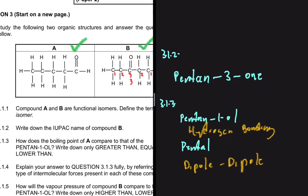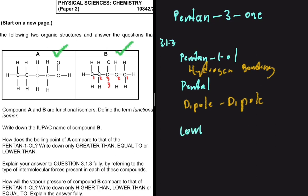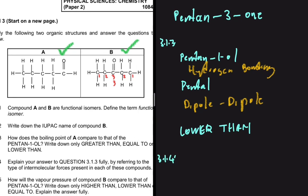Pentanal is an aldehyde, so its intermolecular forces are dipole-dipole. To answer this question you need to know which intermolecular force is generally stronger. Compound A — pentanal — will have a lower boiling point compared to pentan-1-ol. The reason, explained in 3.1.4, is that hydrogen bonding in pentan-1-ol is stronger than dipole-dipole in pentanal, so more energy is required to overcome the intermolecular forces, resulting in a higher boiling point for pentan-1-ol.